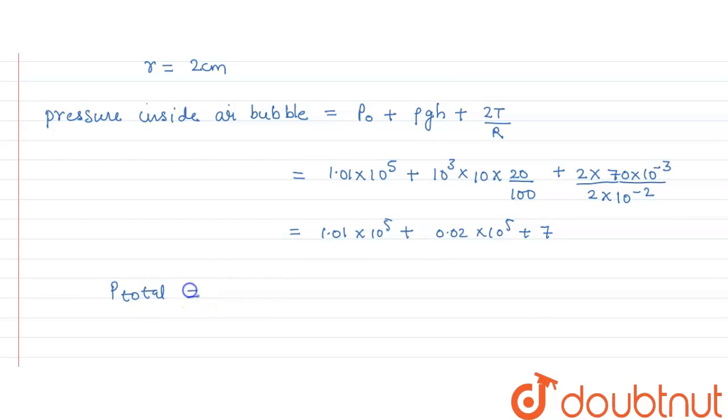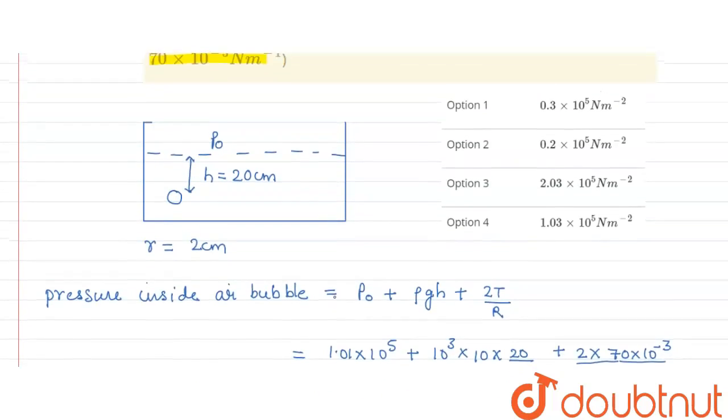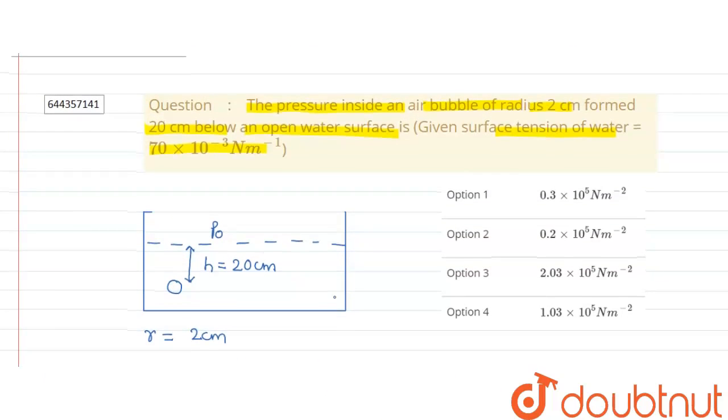So we get 1.01 times 10 to the power 5 plus 0.02 times 10 to the power 5 which equals 1.03 times 10 to the power 5 Newton per meter square or Pascal. So option D is correct. Thank you.